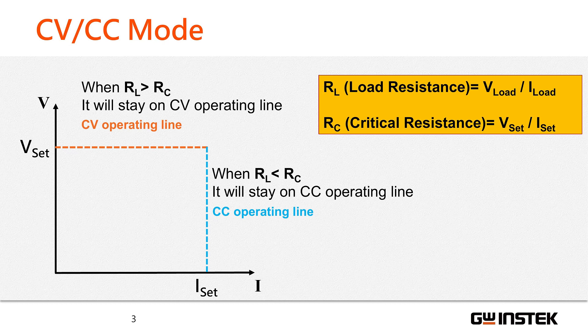When the load resistance is less than the critical resistance, the power supply operates in CC mode to maintain a constant current. For instance, when the power supply operates without connecting any load, the load resistance is effectively infinite as the loop is open.